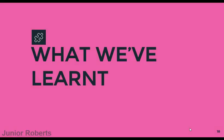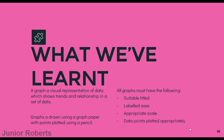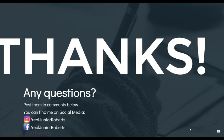To wrap up: a graph is a visual representation of data showing trends and relationships. We use graph paper and a sharp dark pencil for plotted points. All graphs must have a suitable title, labeled axes, an appropriate scale, and data points plotted appropriately. To plot graphs we use a seven-step approach.